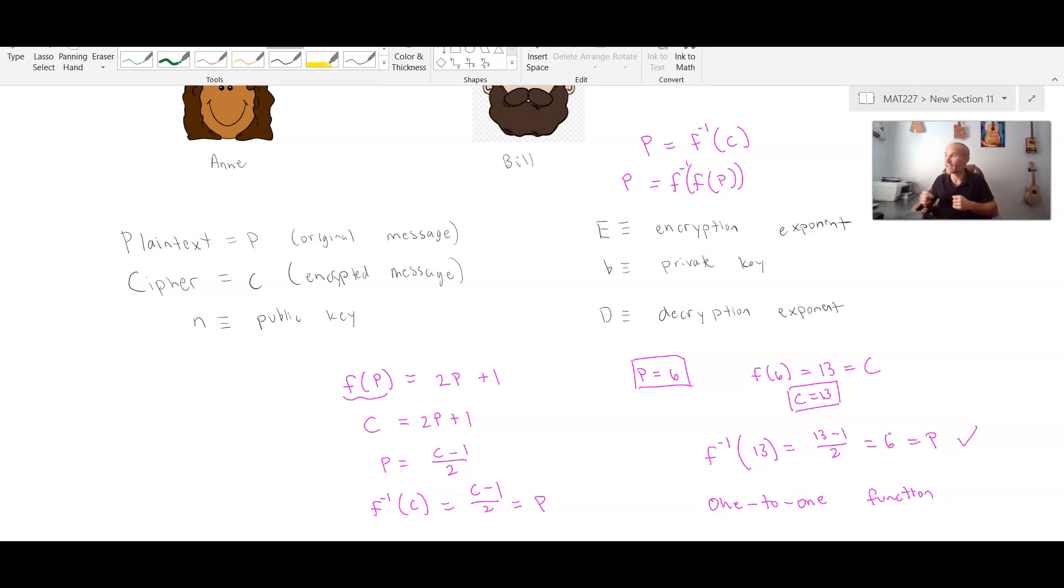Because again, it would be problematic if Bill took c equals 13, plugged it into his function, came up with p equals 6 one time, p equals 12 another time, p equals 14 another time. We would never be able to successfully transmit data.